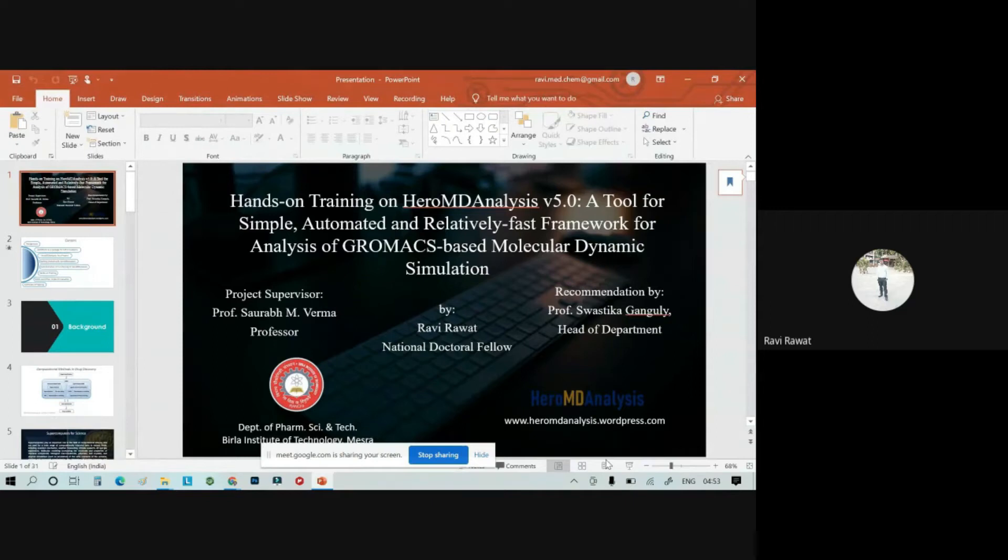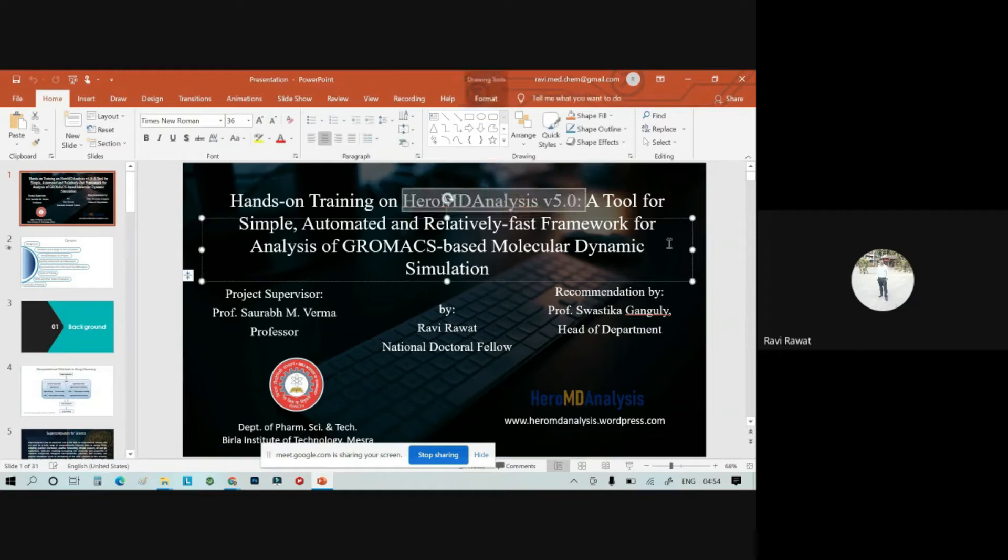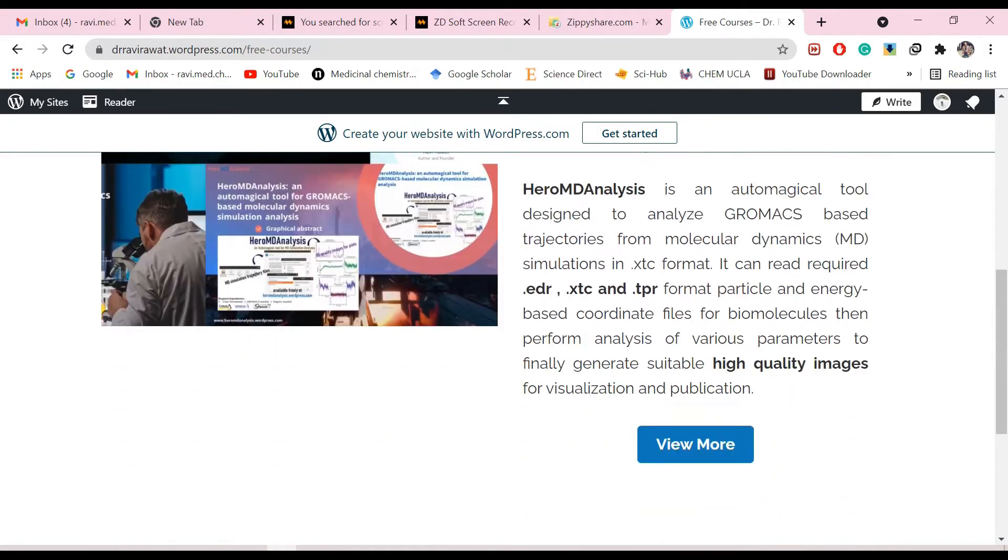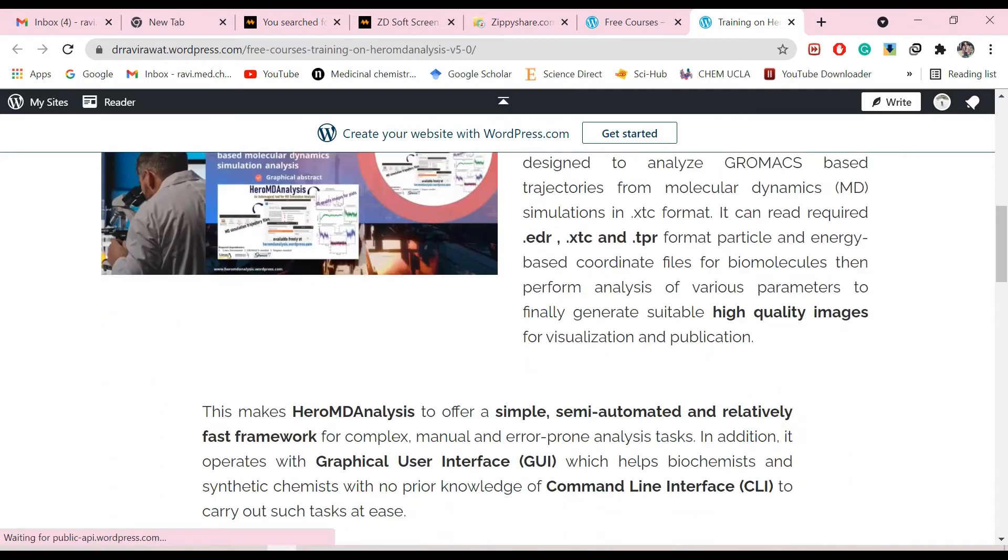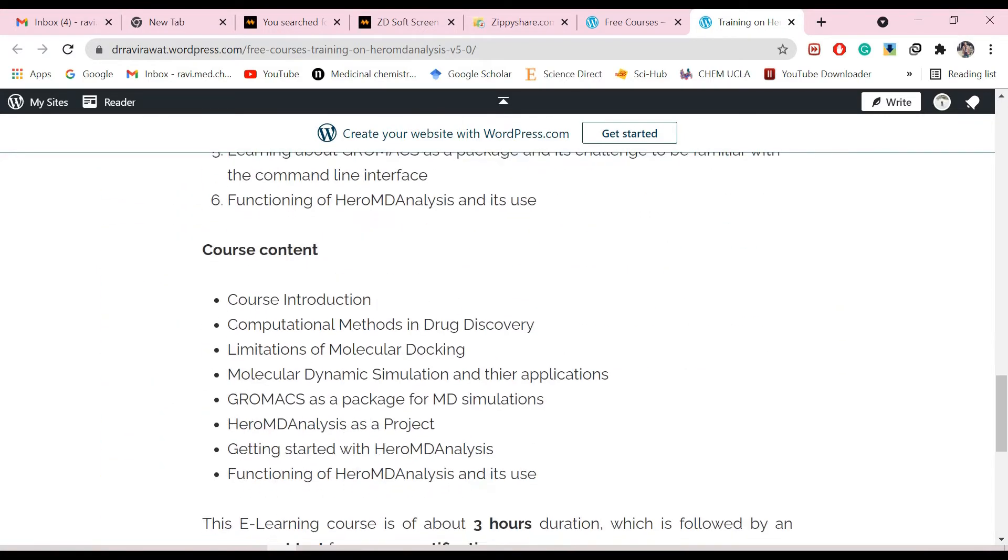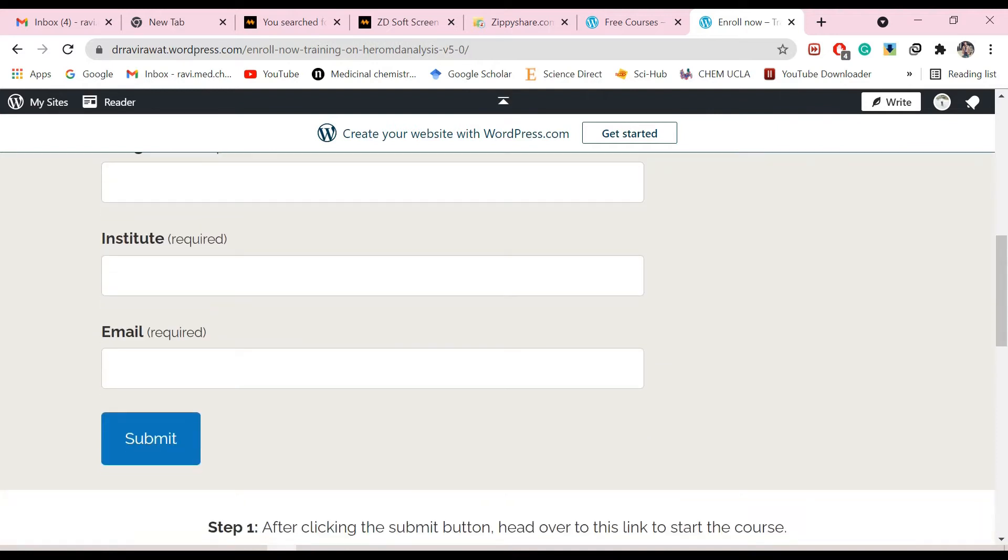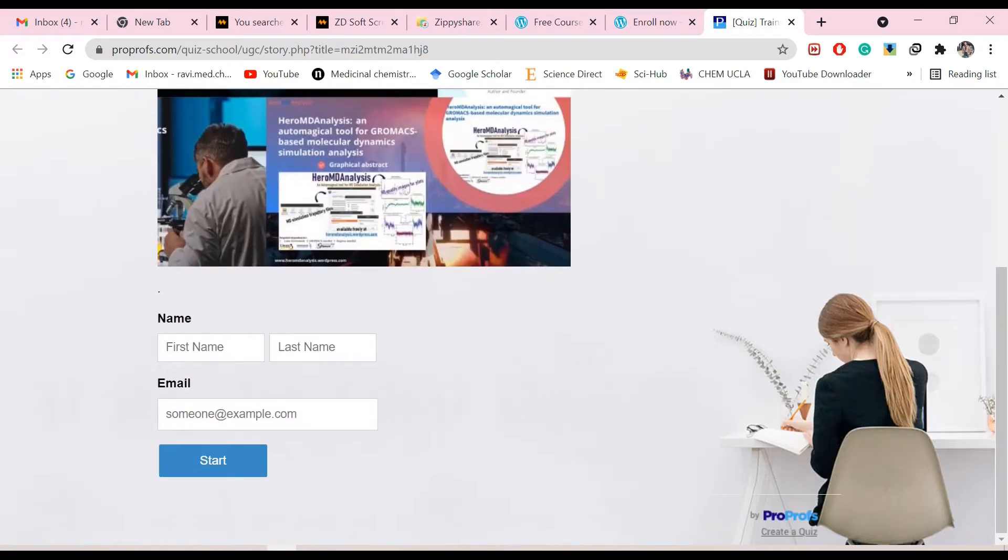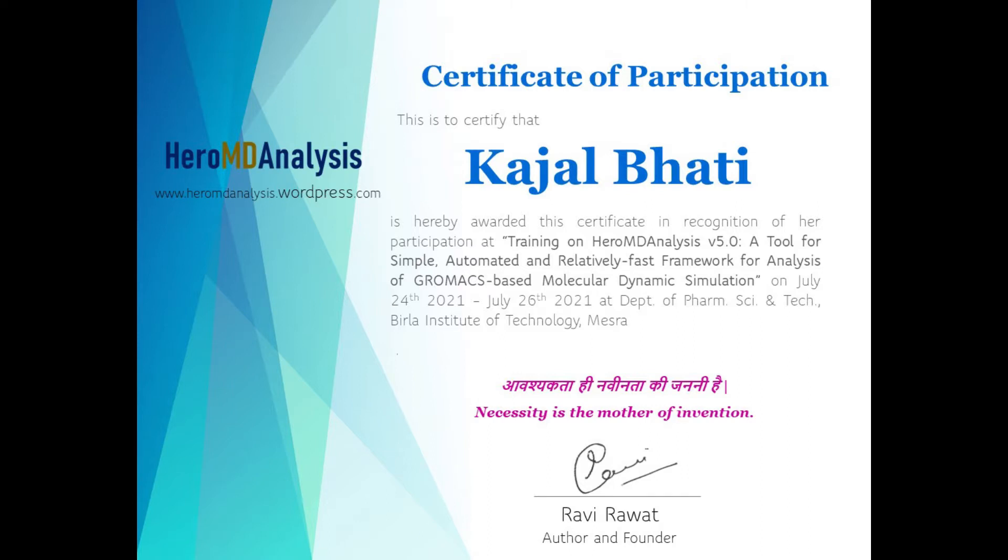My name is Ravi Rawat. I work as a National Doctoral Fellow. This is the tool that I have created by myself. From the presentation itself and the training that you will receive, we can evaluate you and once we evaluate you, we can certify you that you have trained on this tool so you can get a certificate in return.